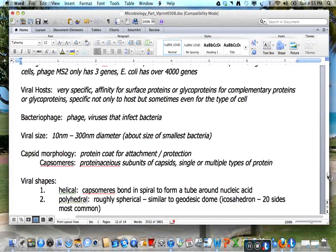Viral size ranges from 10 nanometers to 300 nanometers in diameter, which is about the size of the smallest bacteria. The capsid has the protein coat for attachment and protection. Capsomeres are the proteinaceous subunits of the capsid and may be single or multiple types of proteins.